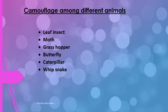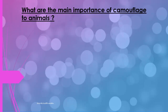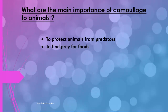All these examples show camouflage among different animals. The main importance of camouflage to animals: first, to protect animals from predators; second, to find prey for food.